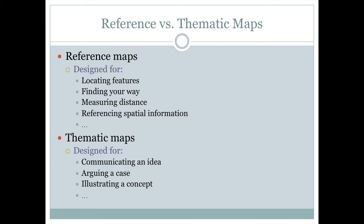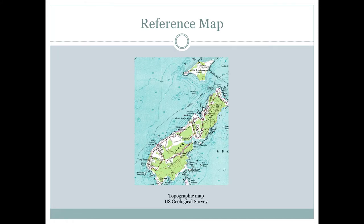Let's look at some examples. Here's a reference map. This one is from the U.S. Geological Survey, and it has all sorts of information on it associated with Long Island — where the roads are, other features, contour lines to show how high things are. All that sort of information is captured on this map.